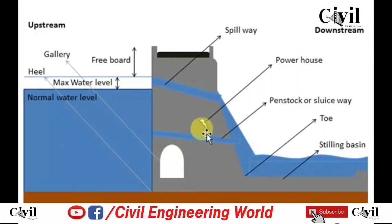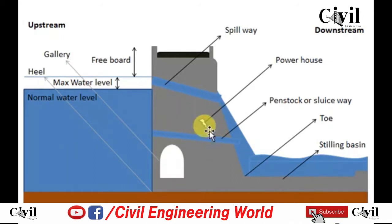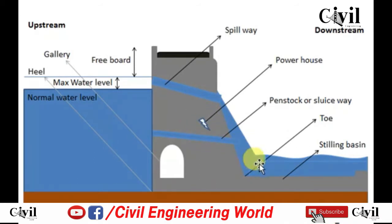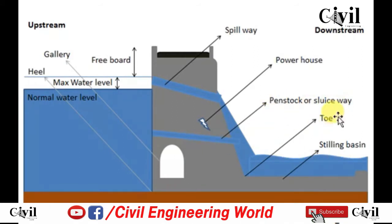In the penstock or sluiceway, there is a tunnel through which water moves from upstream to downstream and it hits the turbine to generate electricity. Water has high kinetic energy through the penstock.